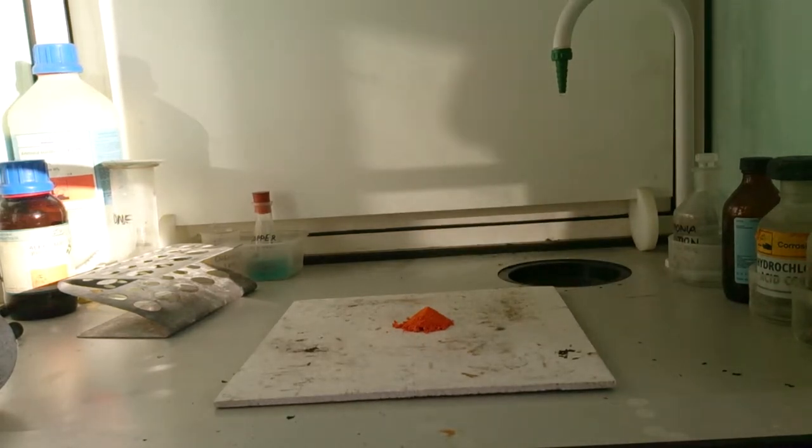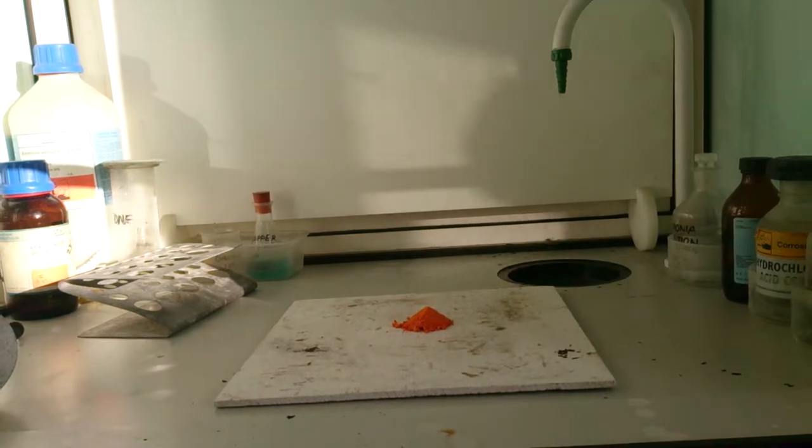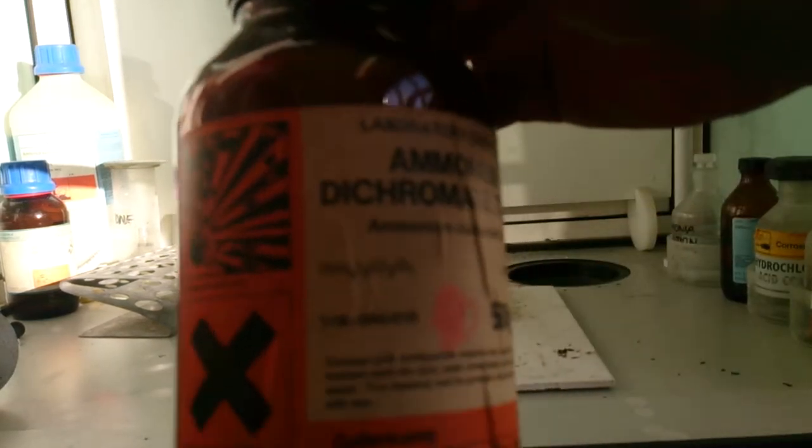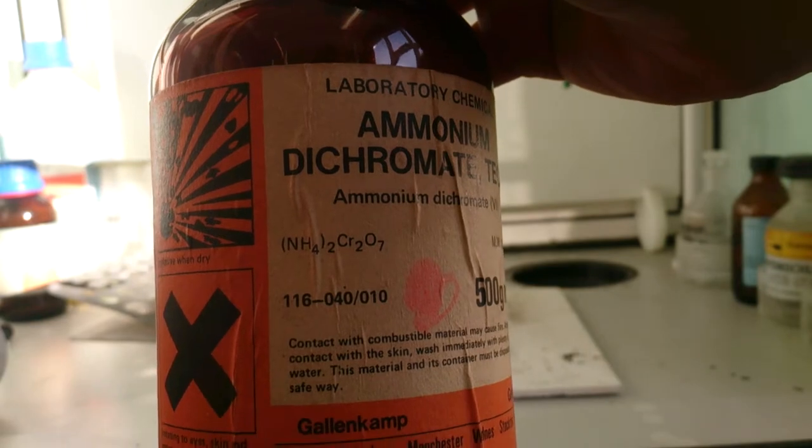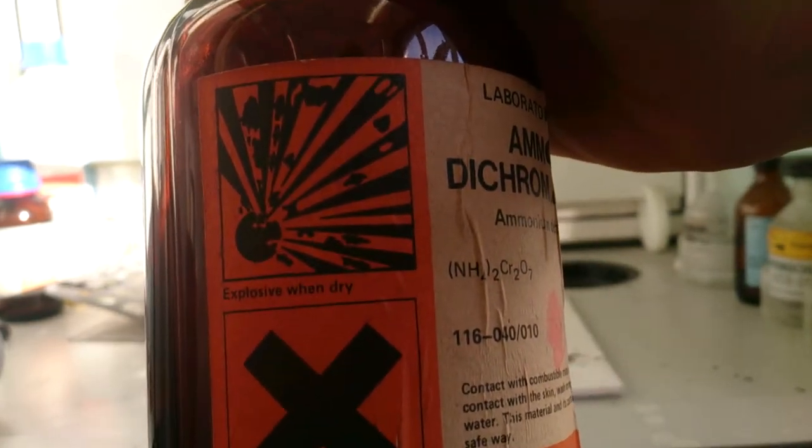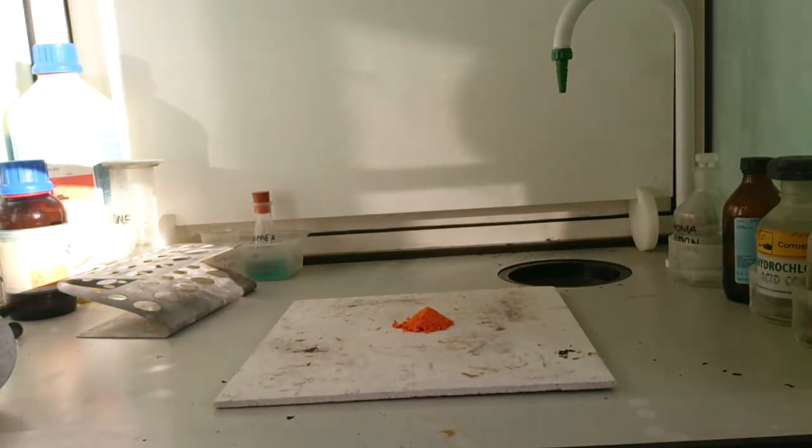Now, the pile that you see there is ammonium dichromate, which is a combination of ammonium and chromium. I'll show you the chemical formula there. When it focuses is NH42Cr2O7. It also says explosive when dry, which that is a dry powder.